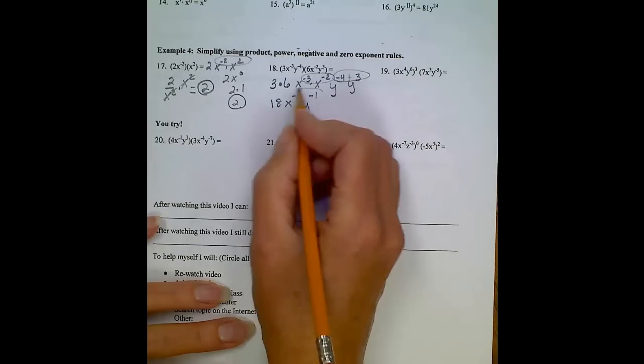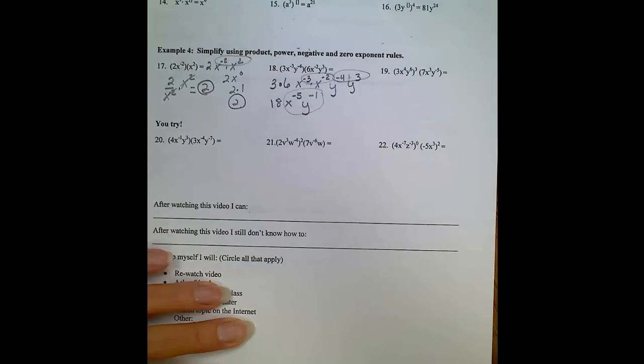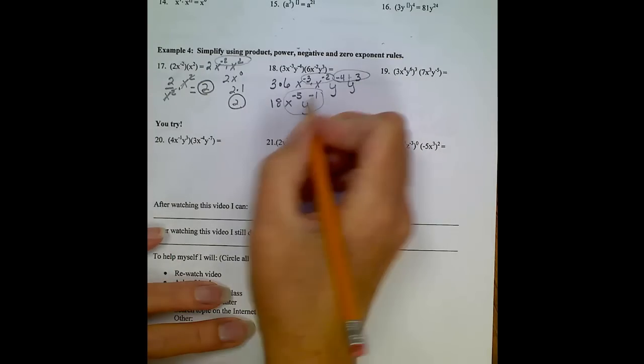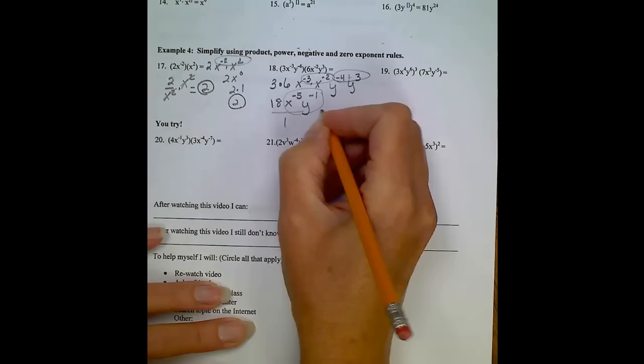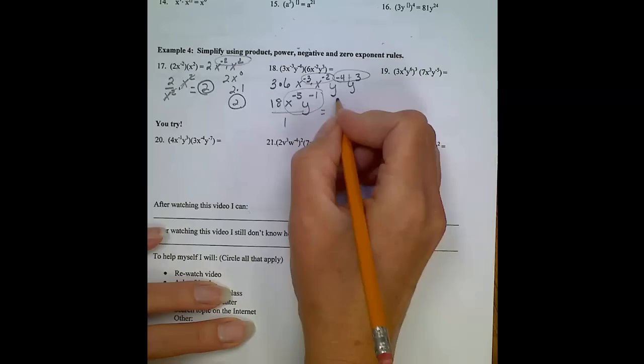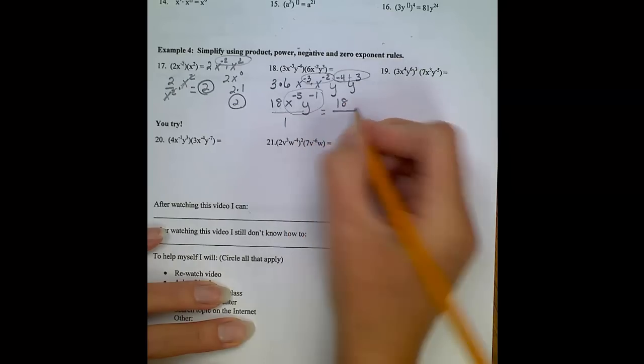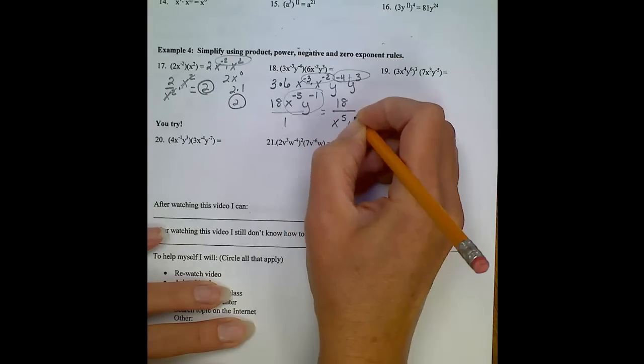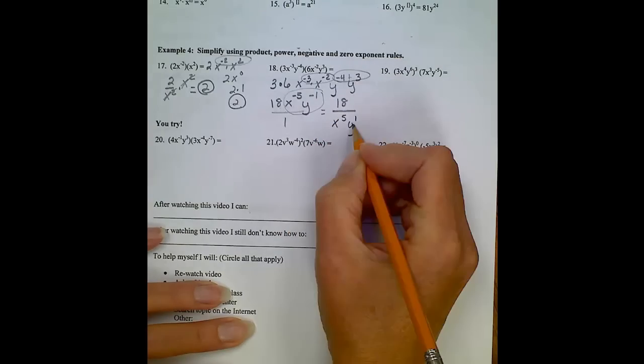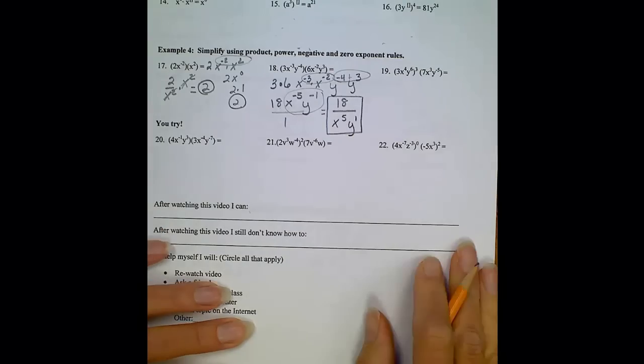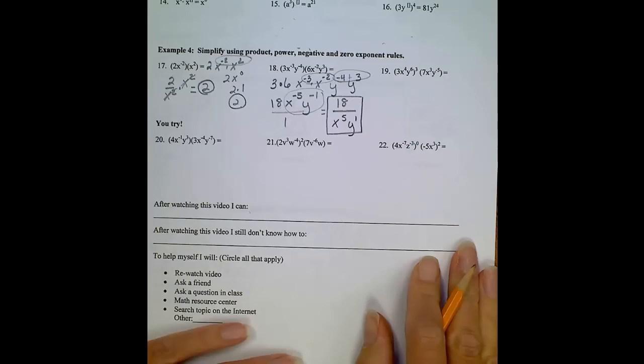Now there's a rule that says you cannot have negative exponents in your final answer. So since these are really considered part of the numerator, I'm going to move them to the denominator. However, the 18 is going to remain in the numerator. So we're going to bring down x to the 5th, make it positive, and you can either write y to the 1st power or just leave it y. It means the same thing.